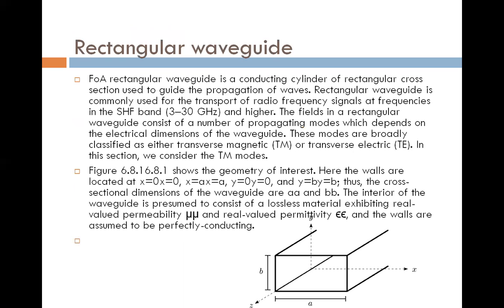Now next is rectangular waveguide. See the structure. Rectangular waveguide has two dimensions, A and B. It is a conducting cylinder of rectangular cross section used to guide the propagation of waves. Rectangular waveguide is commonly used for the transport of radio frequency signal at frequency in SHF band, super high frequency, 3 to 30 GHz and higher.